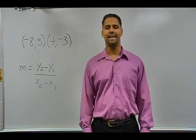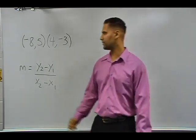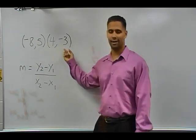What we are trying to do in this problem is to figure out what is the slope of a line that passes through the ordered pairs negative 8, positive 5, and positive 4, negative 3.